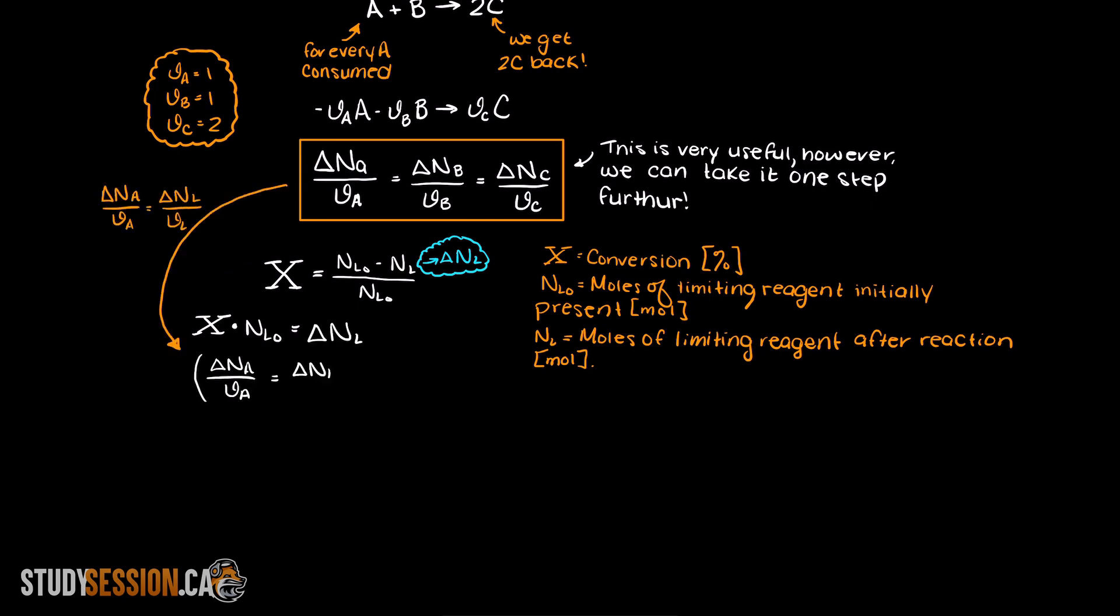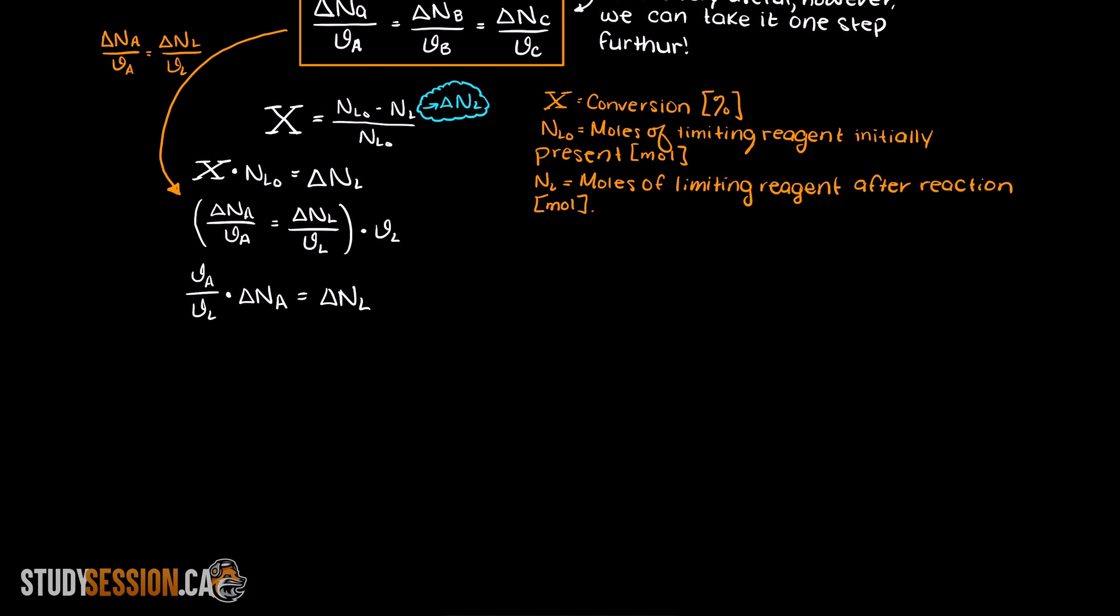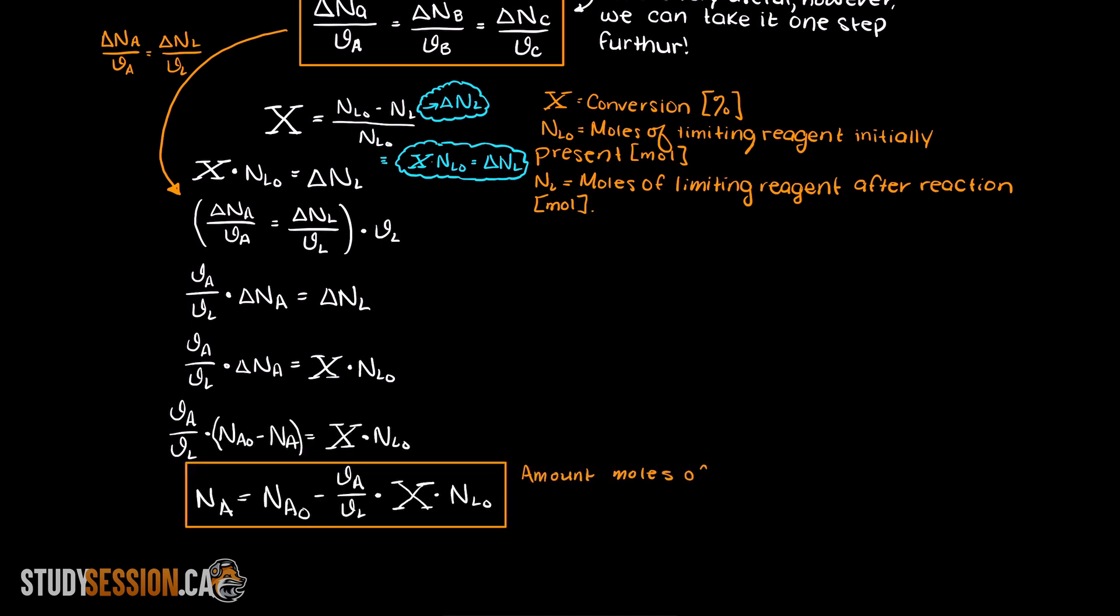We can rearrange the conversion equation and plug that back into equation 1. After a bit of rearranging we can now find the amount of moles after our reaction for any species in our single reaction system. It is just proportional to the change in the limiting reactant and this is extremely useful.